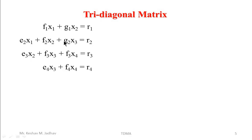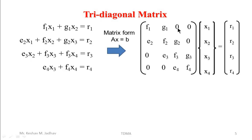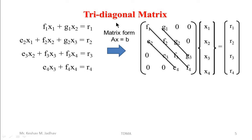Let us consider a set of equations. If we write them in matrix form Ax = b, we get a matrix where there are three diagonal elements which are nonzero and all other elements are zero. This type of matrix is called a tridiagonal matrix.